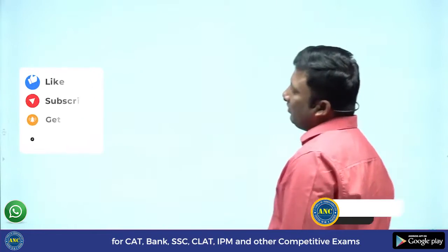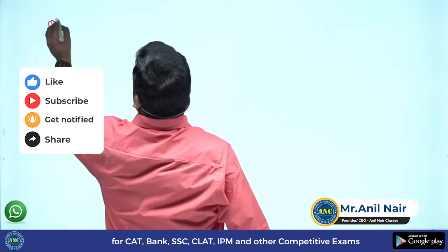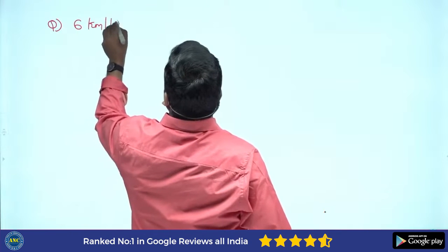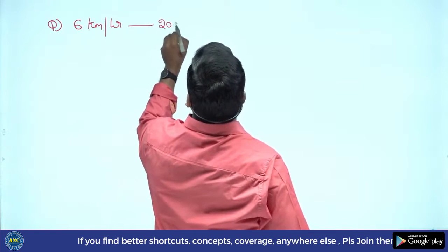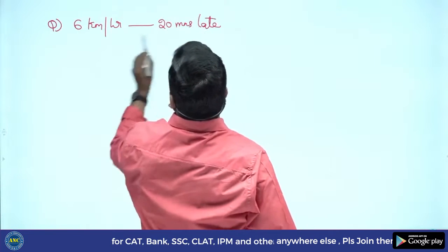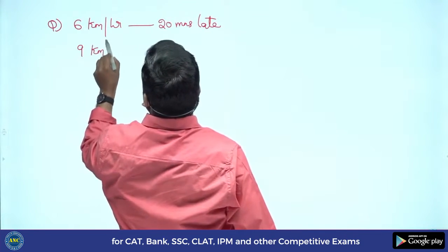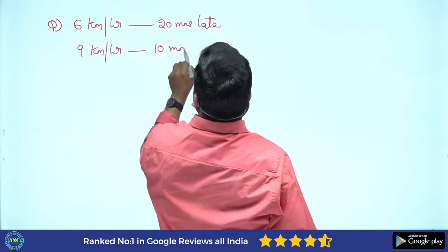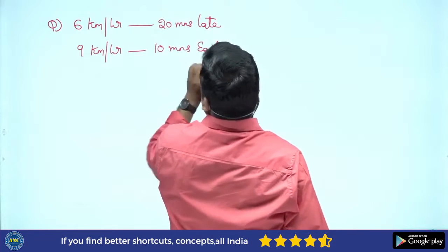Now we will write down question 6: traveling at 6 kilometers per hour, arriving 20 minutes late; traveling at 9 kilometers per hour, arriving 10 minutes early.